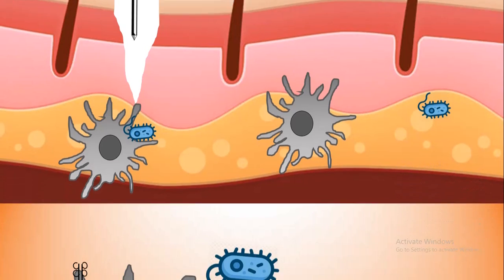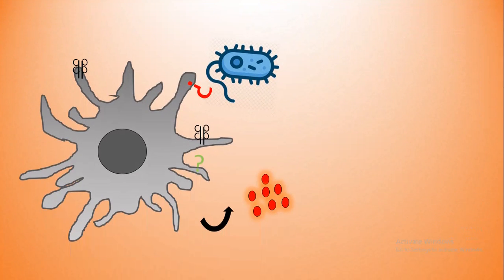One option is that dendritic cells recognize the pathogen by specific receptors on their surface called toll-like receptors, or TLRs. The bacteria, the pathogen, or some molecular signatures of the pathogen — known as pathogen-associated molecular patterns — could be recognized by the dendritic cell through these specialized receptors called TLRs.